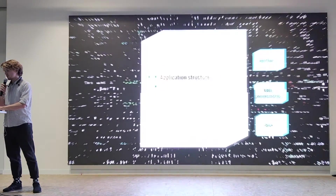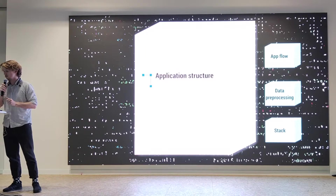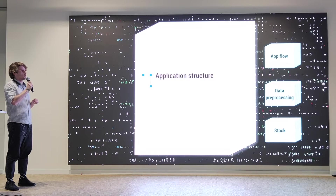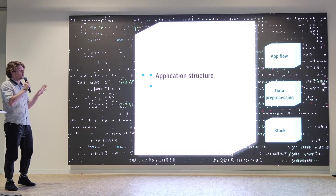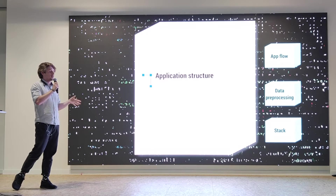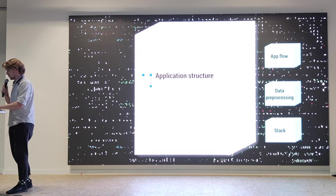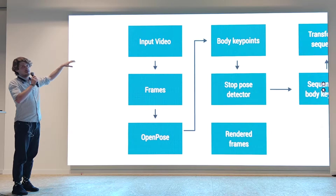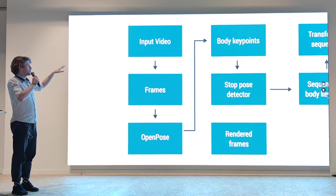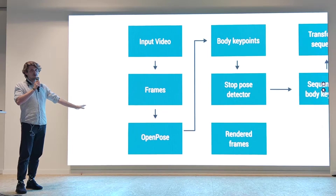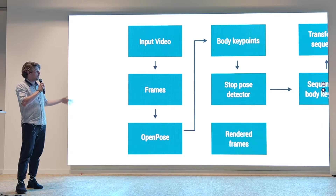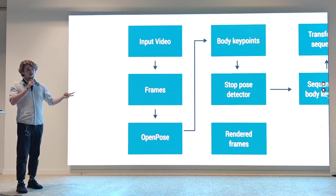We'll now proceed to the models inside. I will cover, at a very high level, my application flow, the data processing contained in my project, and briefly what tools are used. With the application flow: we take a raw video as input, we split it into frames, and pass it to OpenPose. I will show you later what the output of OpenPose looks like, and from here we start our application.